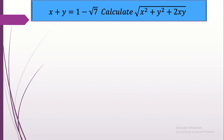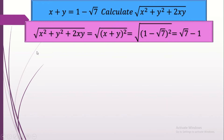Let's start with the first question. We have x plus y equals 1 minus radical 7. Calculate radical of x squared plus y squared plus 2xy. If you know something, x squared plus y squared plus 2xy is (x plus y) all squared. We have the value of x plus y, so we replace it: radical of (1 minus radical 7) all squared. The square cancels the radical.